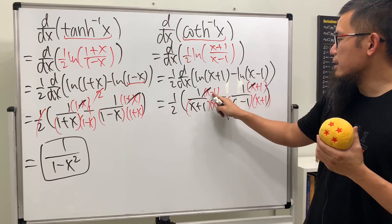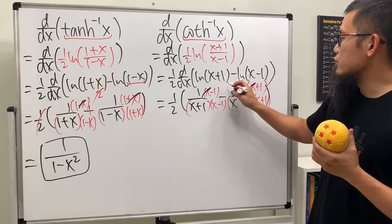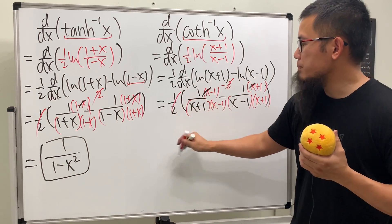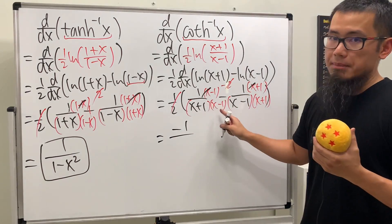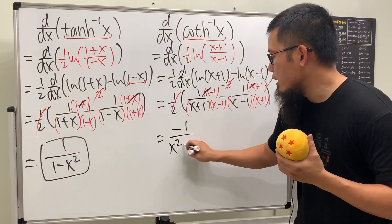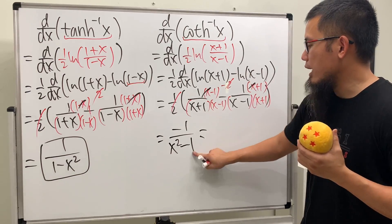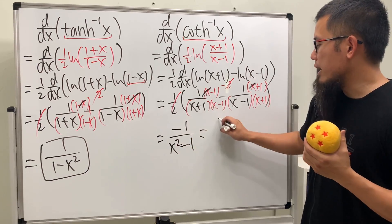And then this is -1 minus 1 which is going to be -2, and then again they reduce. But here we will have -1 on the top over, for the denominator, x² - 1. You see we can actually bring the negative down and you will get 1/(1-x²).